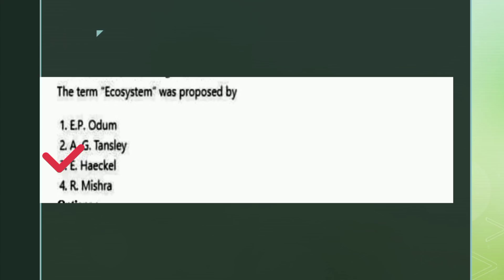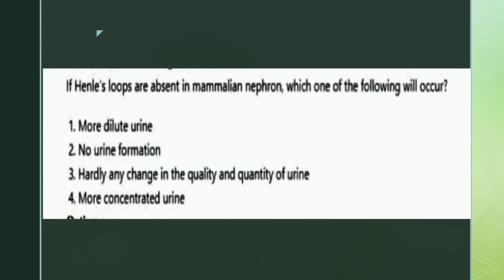The next question: if the loop of Henle is absent in the mammalian nephron, which of the following will occur? The options are: more dilute urine, no urine formation, hardly any change in quality and quantity of urine, or more concentrated urine. The right answer is option one: more dilute urine.